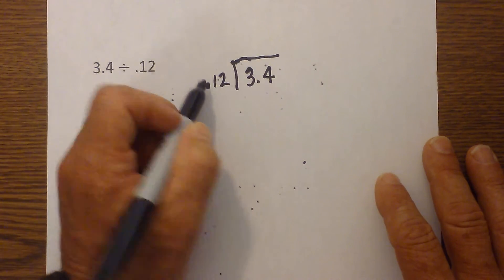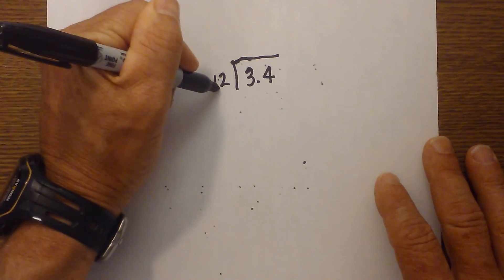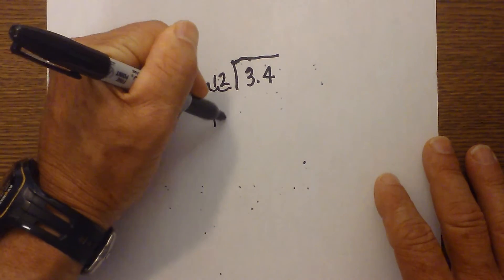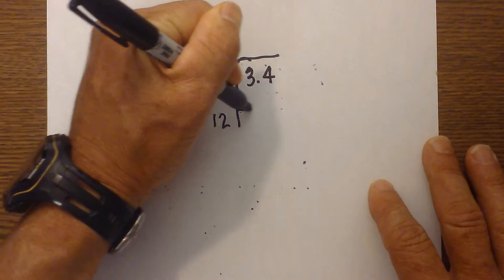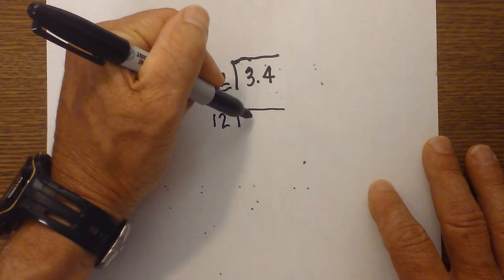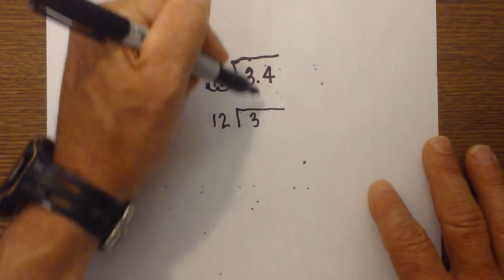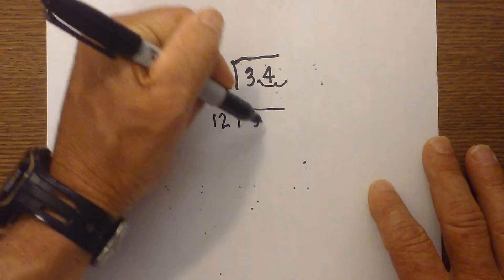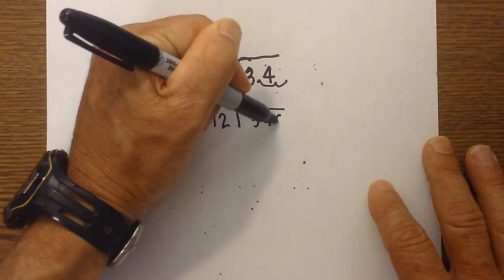So what we do is we're going to move it two places to the right. So this becomes 12. And whatever you do on the outside, you need to do on the inside. So I'm going to move the decimal place two places, and that becomes 340.